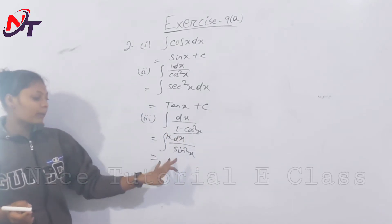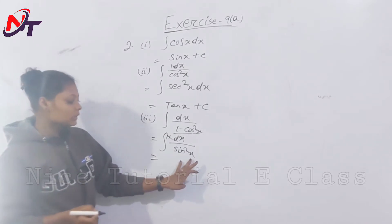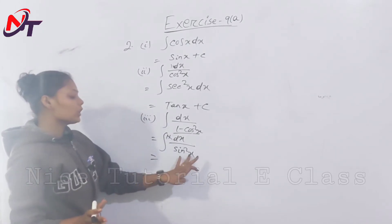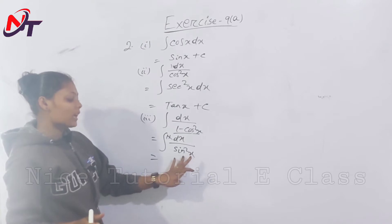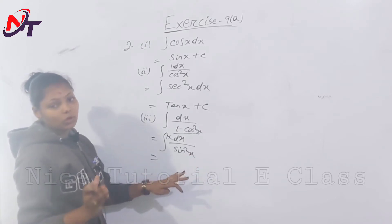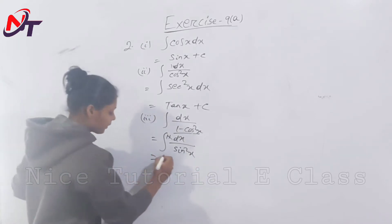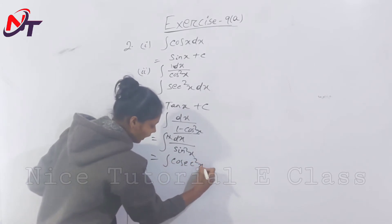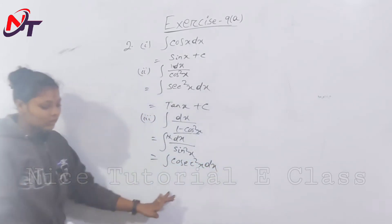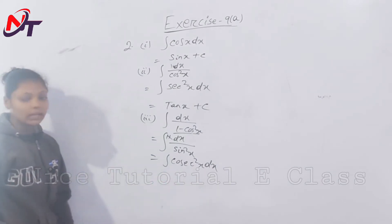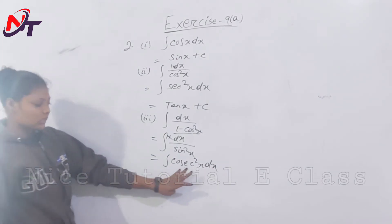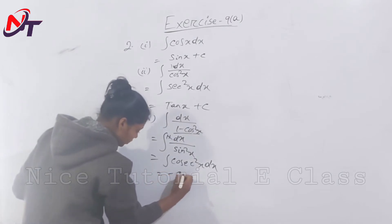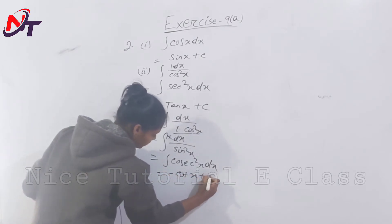1 by sin square x is cosec square x. So integration of cosec square x dx. Using the formula, the answer is minus cot x plus c.